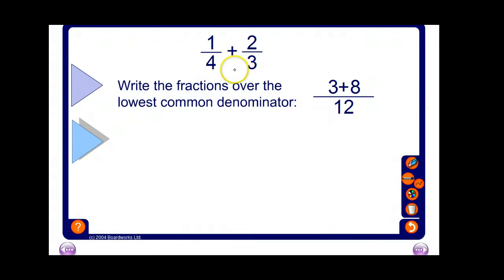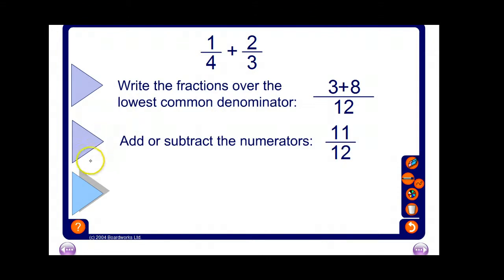From 4 to 12 is three times bigger, so we've got 1 times 3. Three to 12 gets four times bigger, so we've got 2 times 4 is 8. Then we just add the numbers, which in this case is 11. Let's try another one.